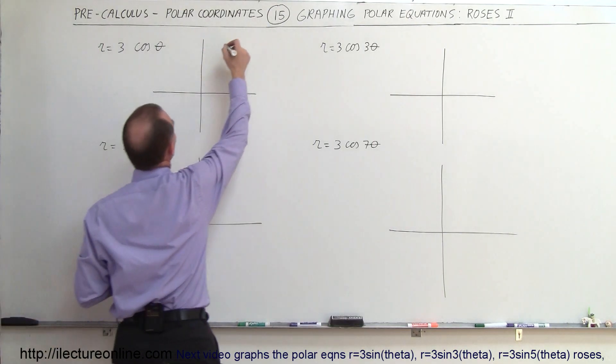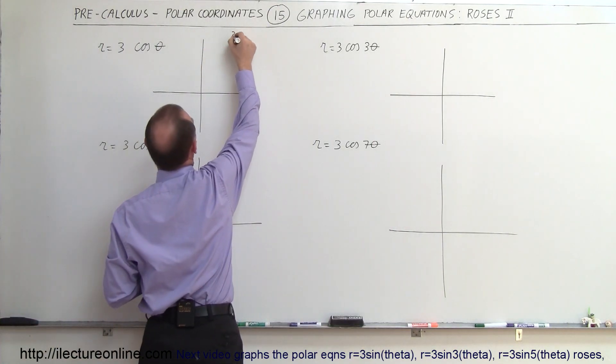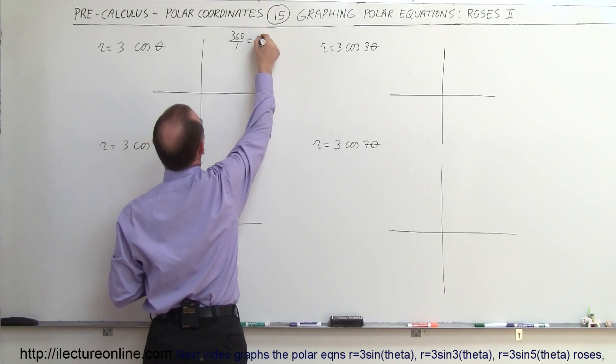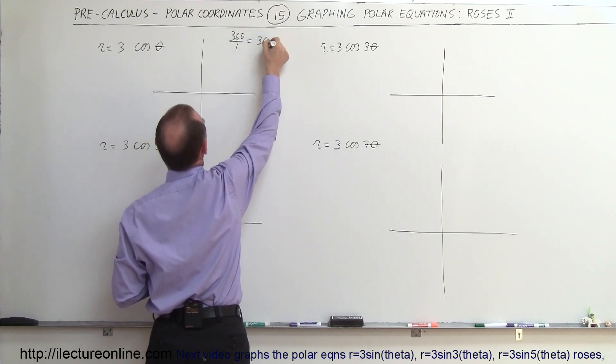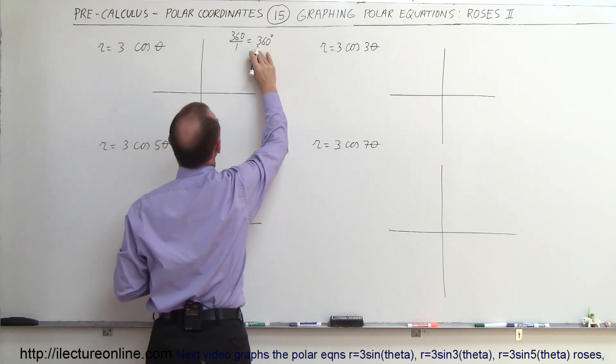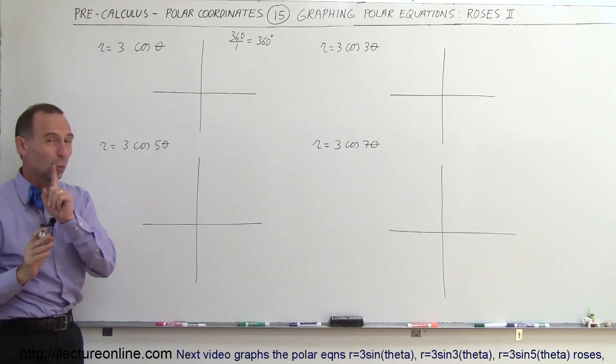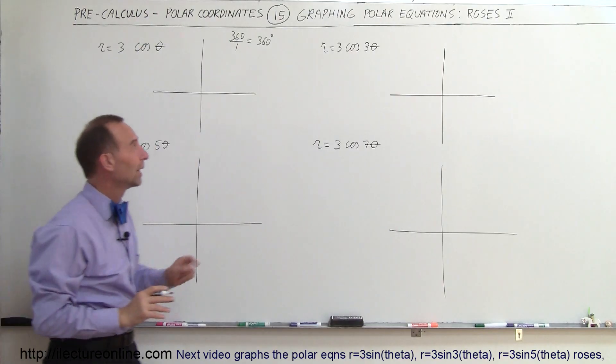For 1 leaf, the spacing is 360 divided by 1, which equals 360 degrees. So every 360 degrees we'll have a leaf, meaning there's only 1 leaf here.